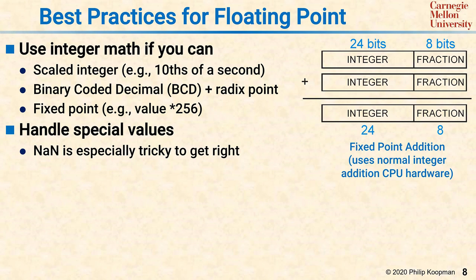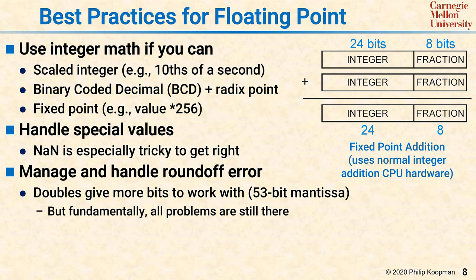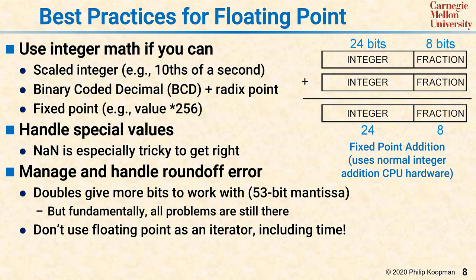Be sure to manage and handle round-off error. Going to double floating point helps a lot. It gives you a 53-bit mantissa, but you will still get round-off error. All these issues are there, they just take longer to manifest. Avoid using floating point as an iterator for a loop, especially using floating point as time. And don't forget, comparisons are especially problematic, due to both round-off and comparisons against special numbers.